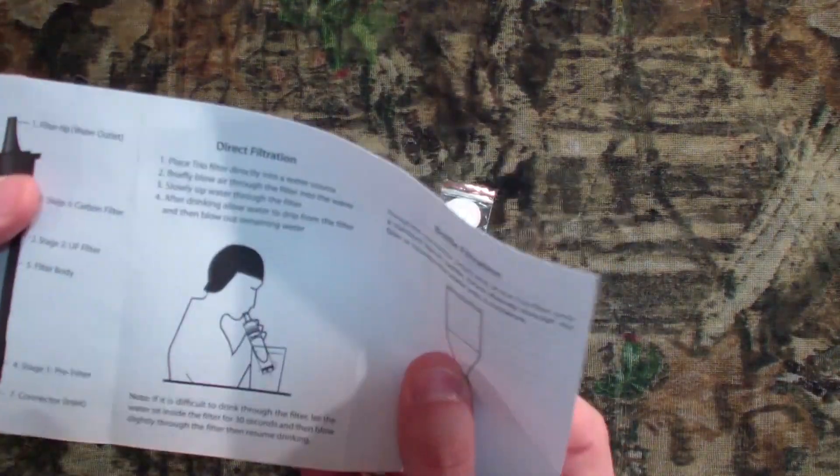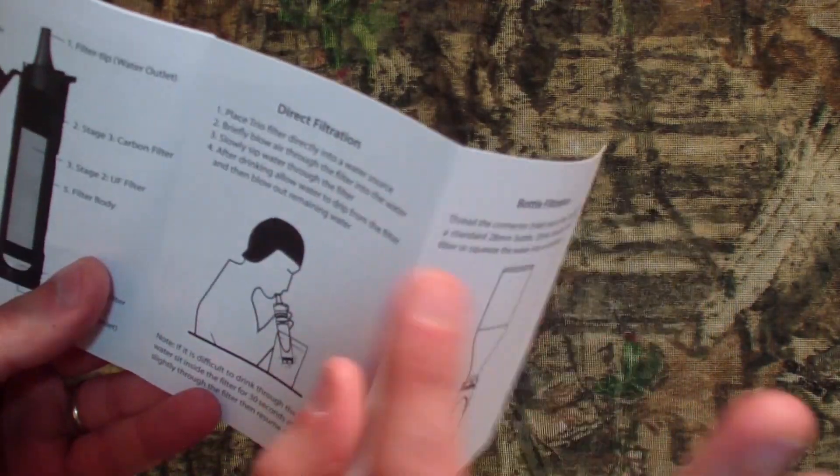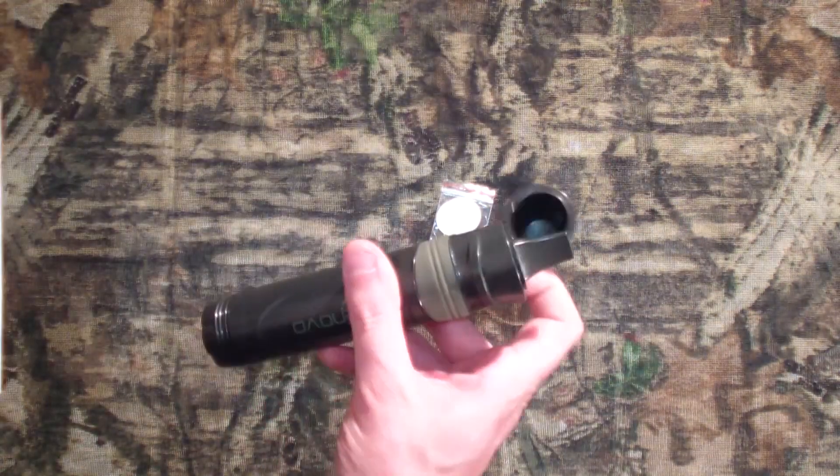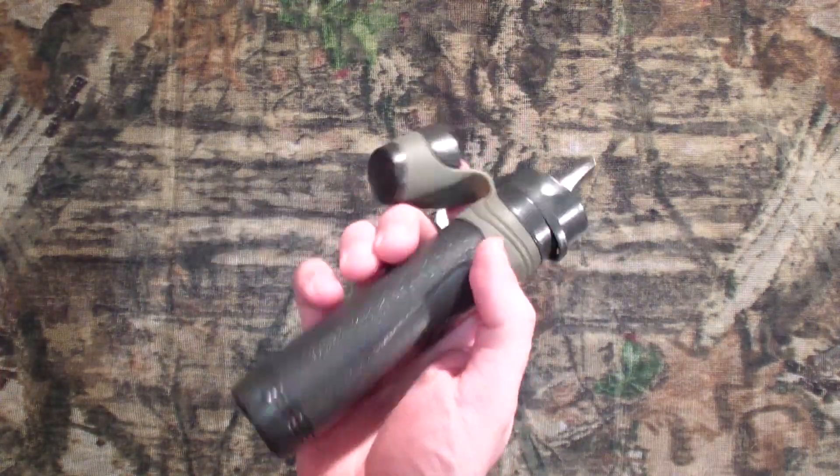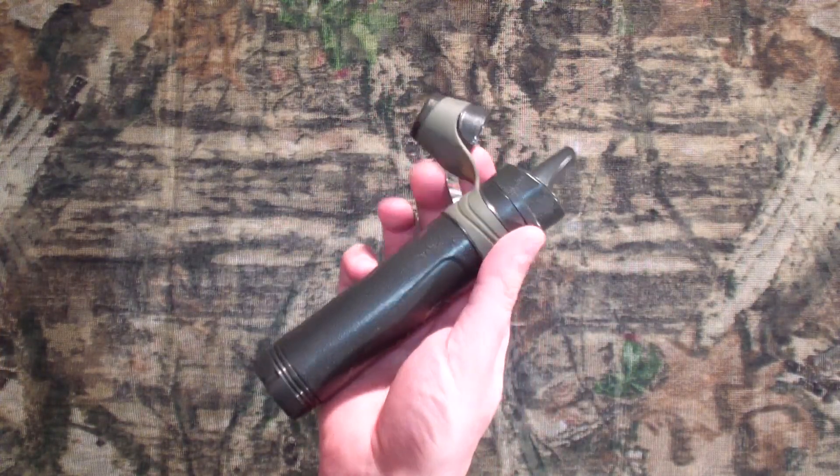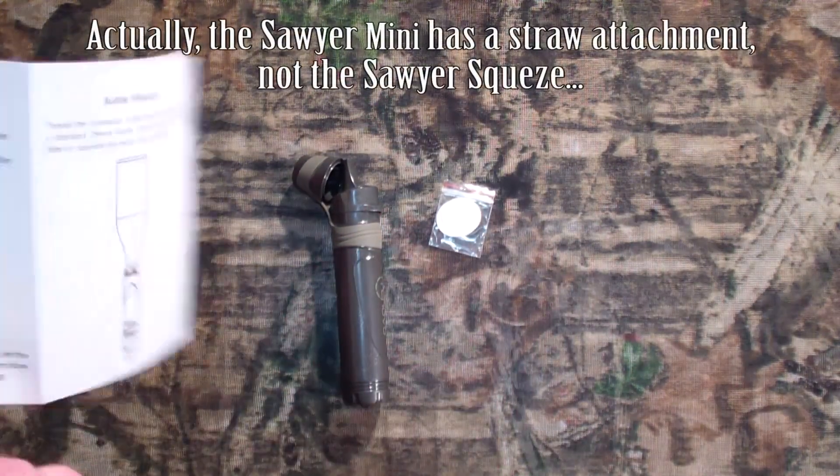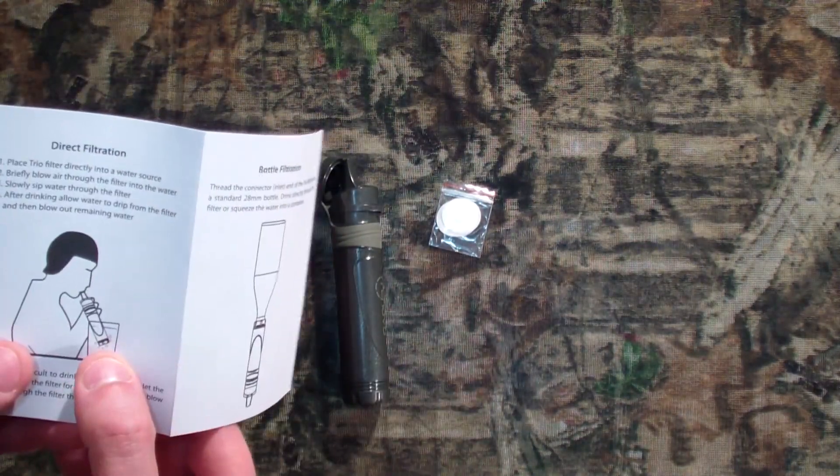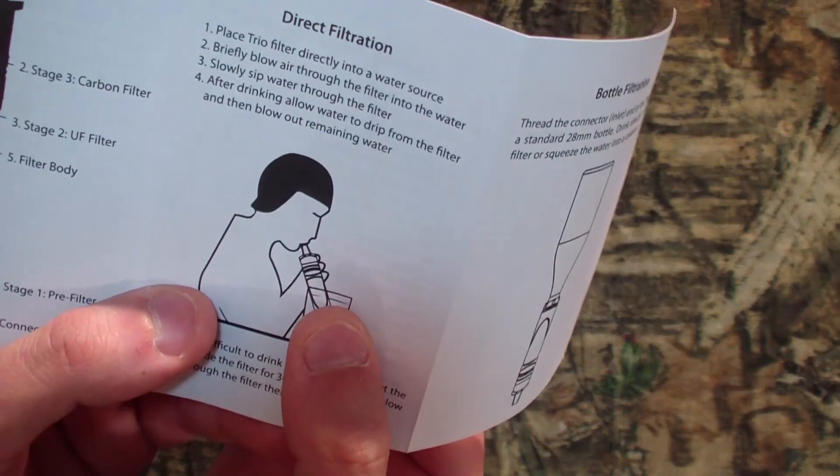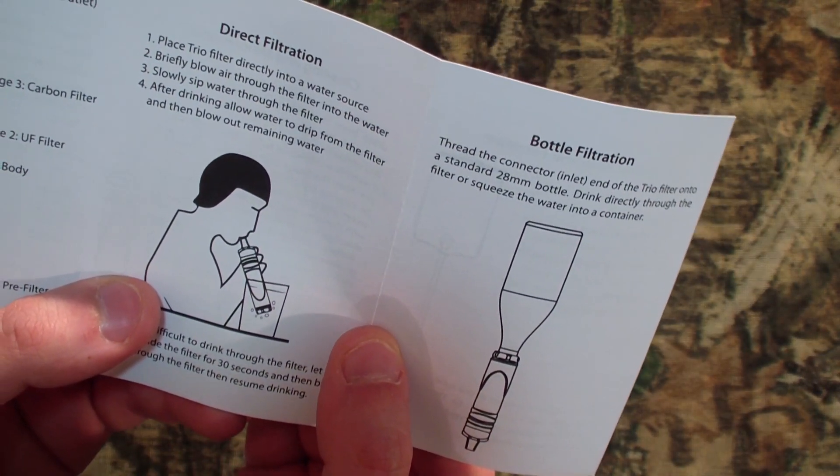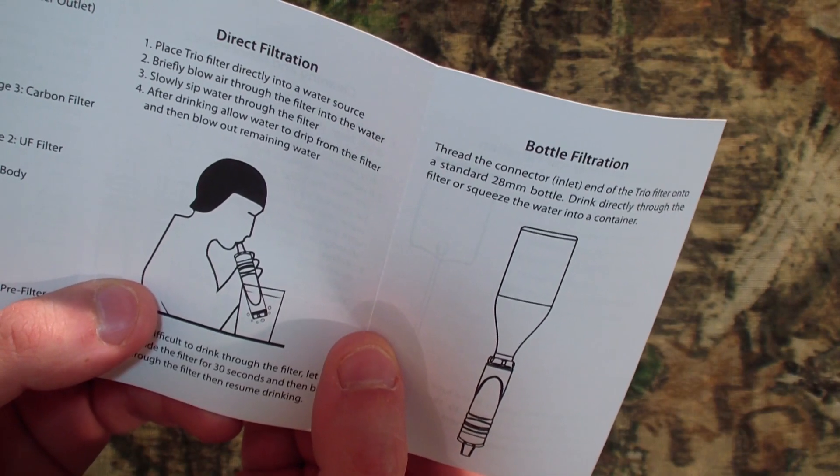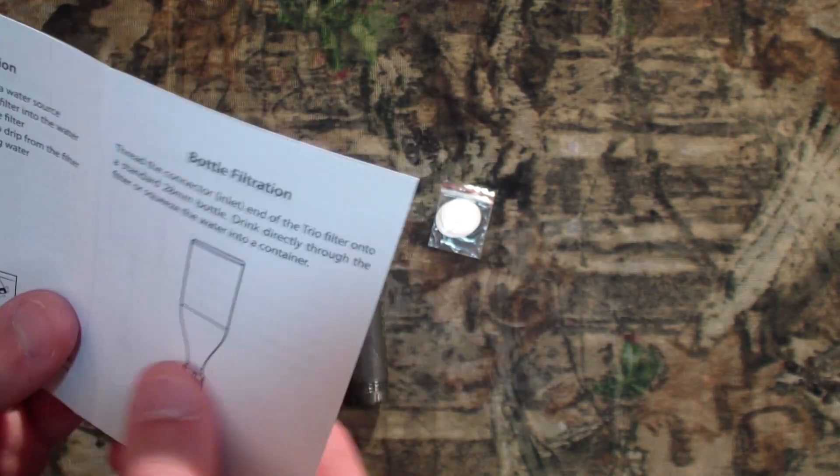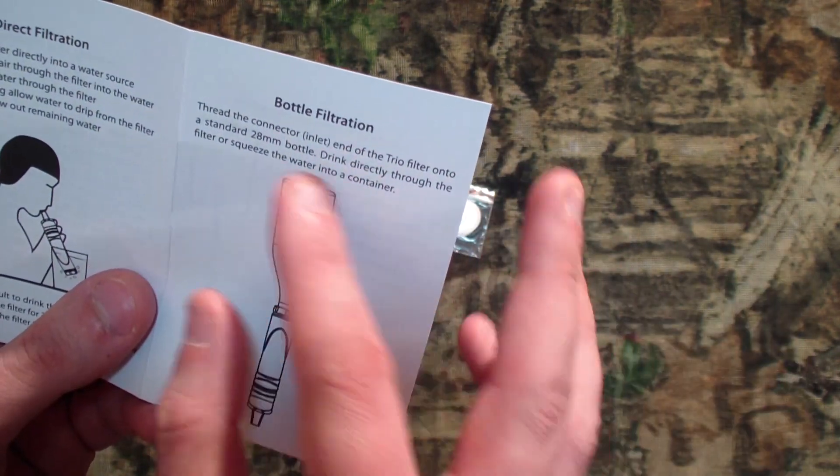All right, back to the book. For direct filtration, you can put it right into a water source. And it is longer than the Squeeze, so it's got a little reach on it. Now the Squeeze has a little straw you can carry around to hook on it, but this one, no need to carry the extra straw. It looks like you just put it right into the source. Briefly blow air through the filter, slowly sip water through filter. After drinking, allow water to drip from the filter then blow out remaining water. So that's your emergency, kind of direct style water filtration.